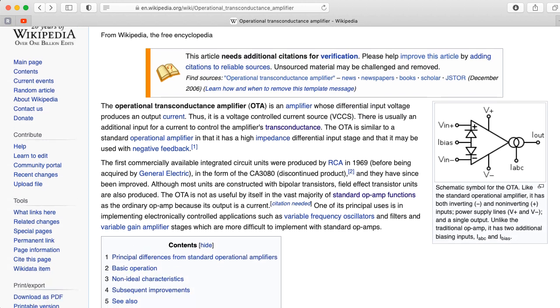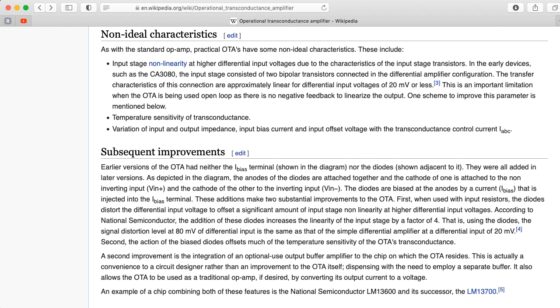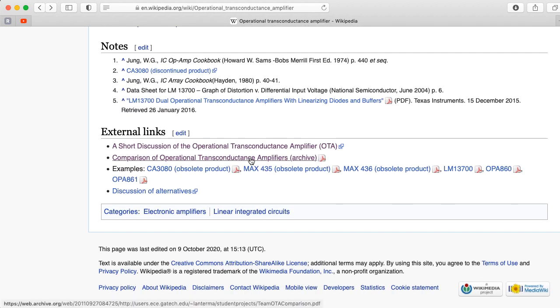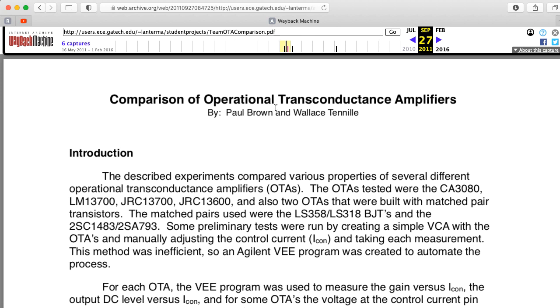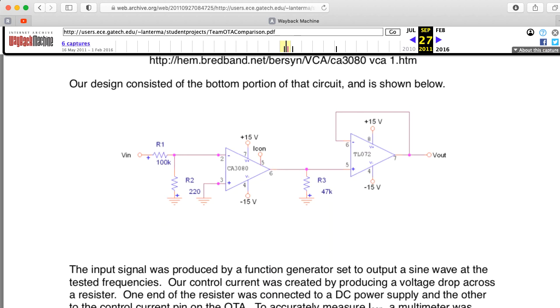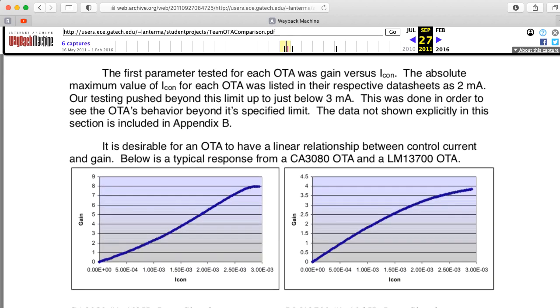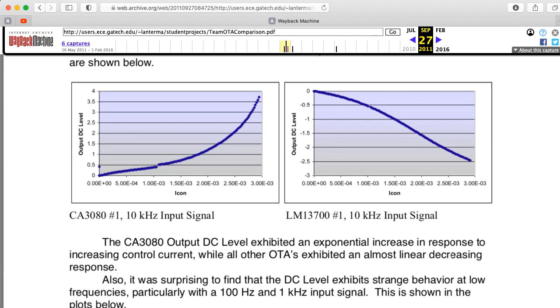And I just discovered that if you look at the OTA webpage on Wikipedia and you scroll to the bottom, one of the references here called Comparison of Operational Transconductance Amplifiers is actually a report that a couple of my students from a much earlier version of my analog circuits for music synthesis class called Theory and Design of Music Synthesizers put together, comparing different OTAs. It's been a long time I forgot about this altogether, so this will be fun to go back and take a look at and see what sort of measurements they made.